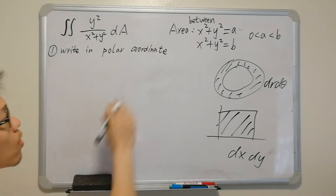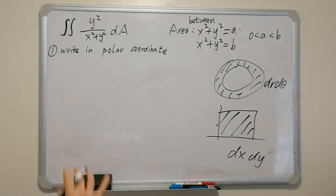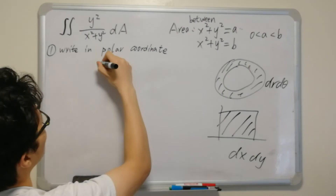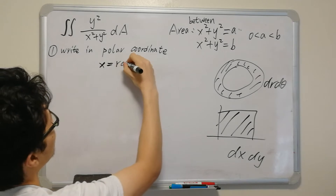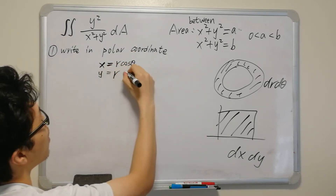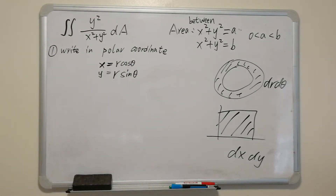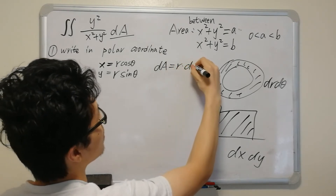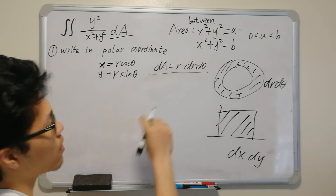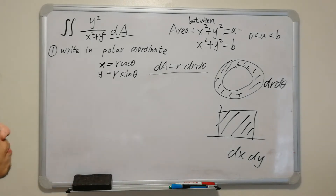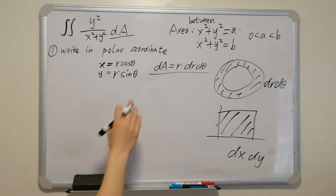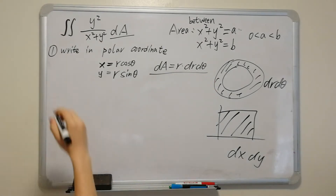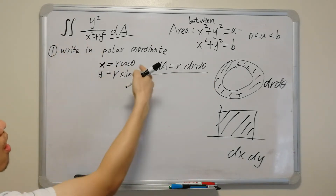To convert to polar coordinates, we use the relationships x = r cosθ, y = r sinθ, and the area element dA = r dr dθ. This formula connecting dA with r, dr, and dθ in polar coordinates is from the textbook.